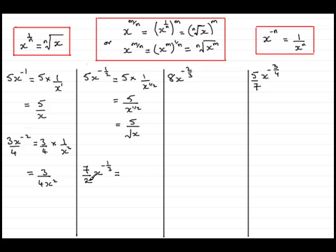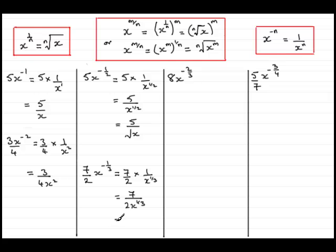In this next example I'm introducing a number in the denominator. We've got 7 over 2 being multiplied by x to the minus 1 third, which we know is times 1 over x to the power third, using the negative power rule. Multiplying the fractions together, you've got 7 times 1 is 7, all divided by 2x to the power third. But x to the power third by this rule is the cube root of x. So we end up with 7 all divided by 2 times the cube root of x.